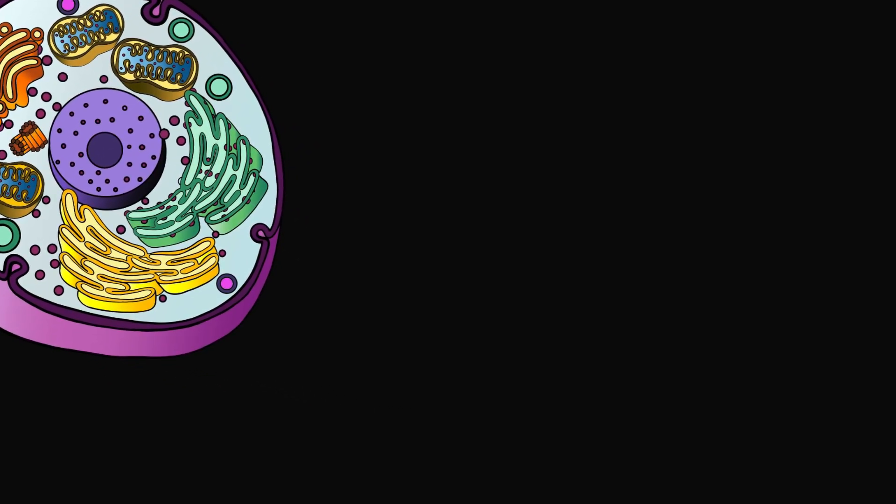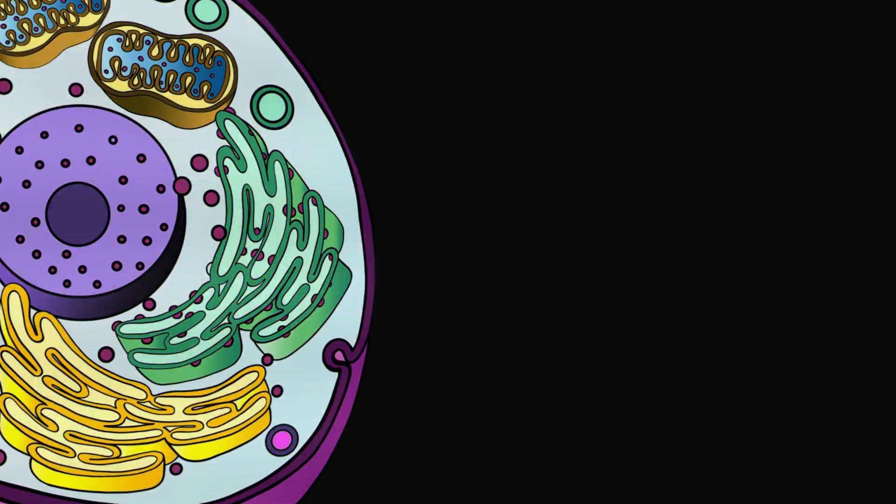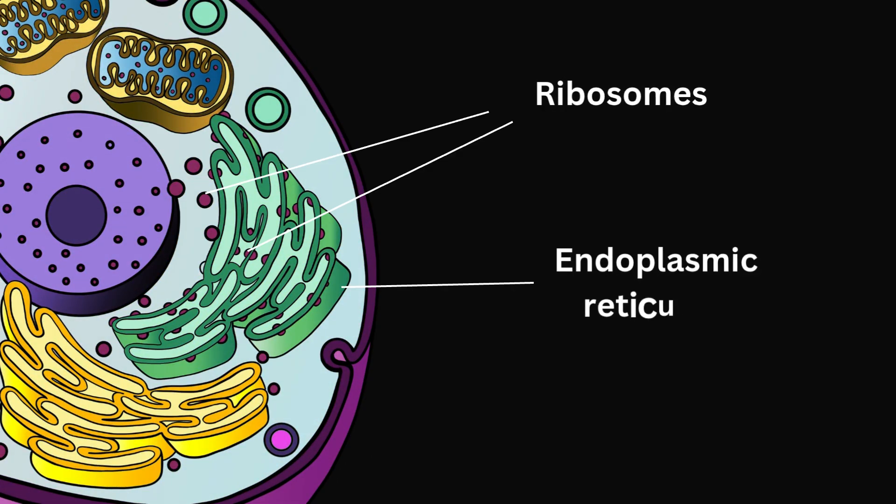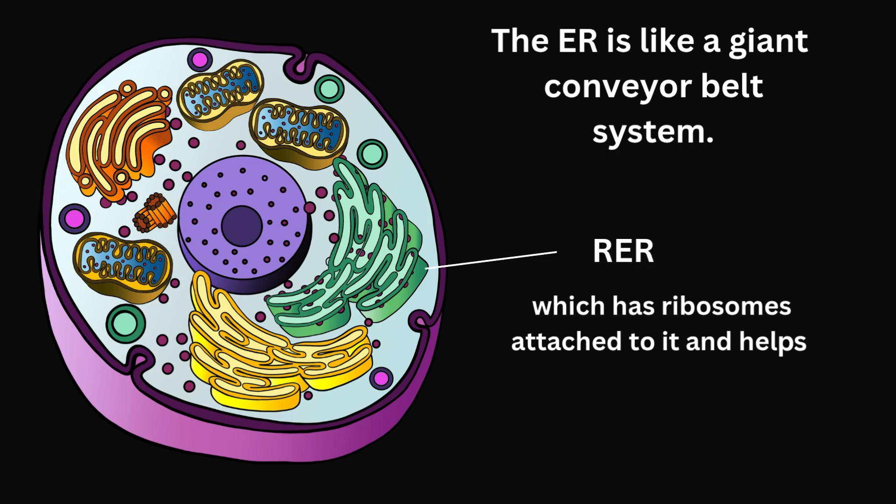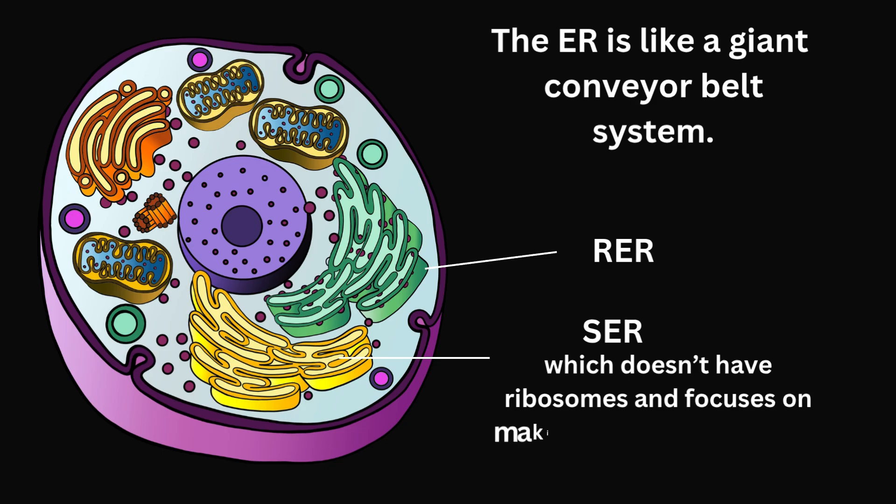Speaking of ribosomes, these little dots are either floating freely in the cytoplasm or stuck onto a network of folded membranes called the endoplasmic reticulum or ER for short. The ER is like a giant conveyor belt system. It comes in two versions, the rough ER, which has ribosomes attached to it and helps with building and transporting proteins, and the smooth ER, which doesn't have ribosomes and focuses on making fats and detoxifying chemicals.